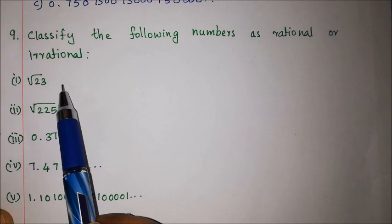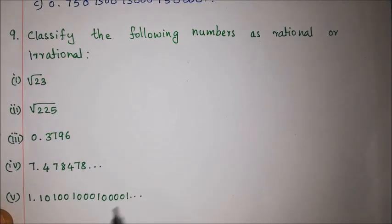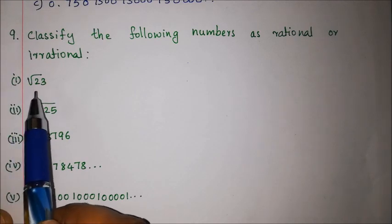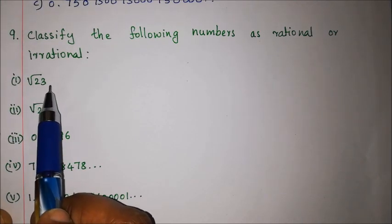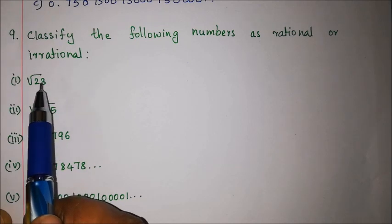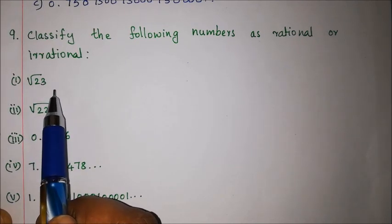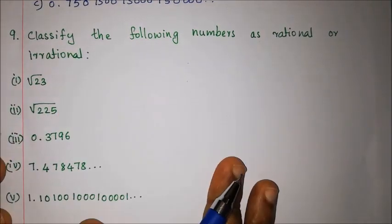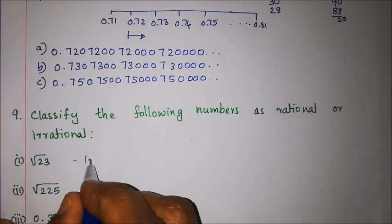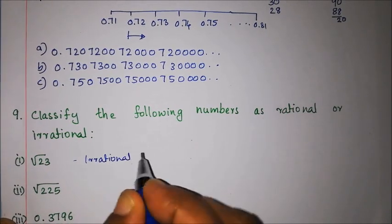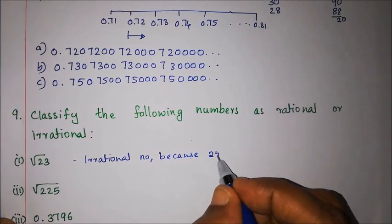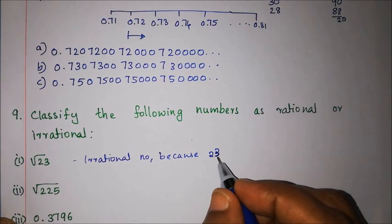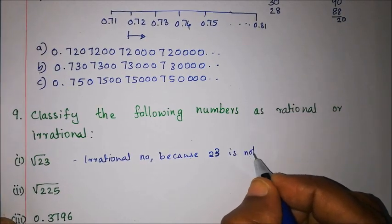Now classifying numbers as rational or irrational. First, square root of 23: 23 is not a perfect square, so square root of 23 is irrational. The reason is that 23 is not a perfect square.